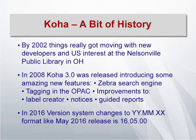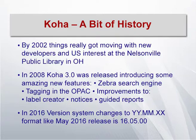Then different versions of Koha came. Koha started with version 1 in 2000, then version 3 came in 2008 with many new features — incorporation of the Zebra search engine, tagging in the OPAC making it interactive, improvements in the label creator, notice generation, guided reports, customized and predefined reports, and complete MARC 21 support — all incorporated in Koha 3.0 in 2008.